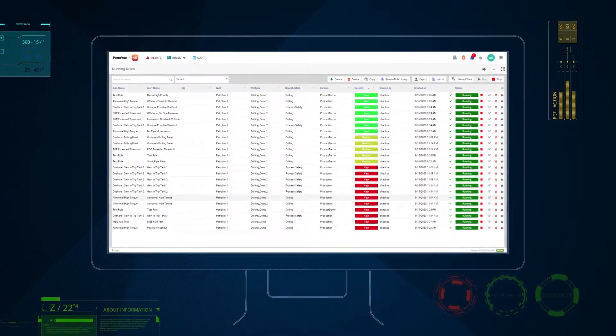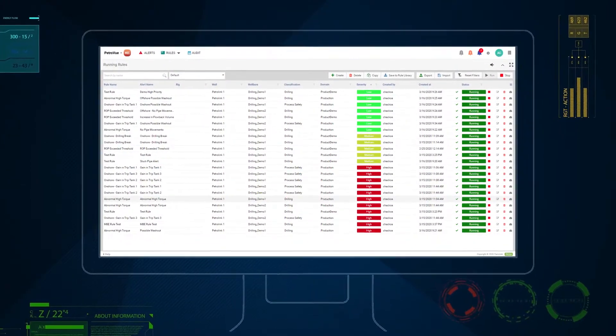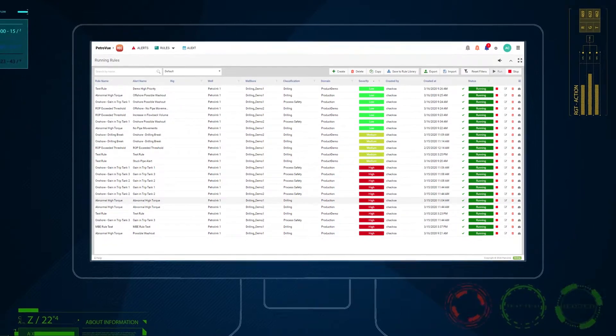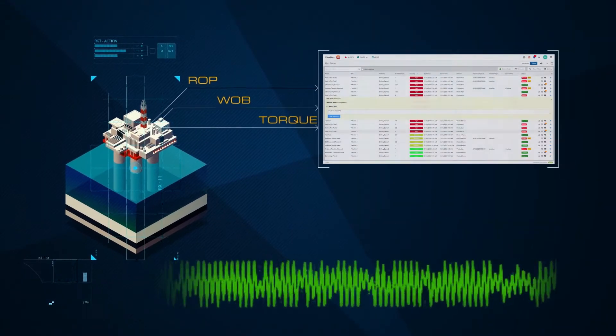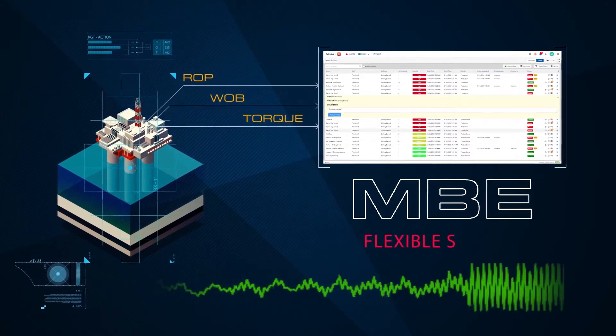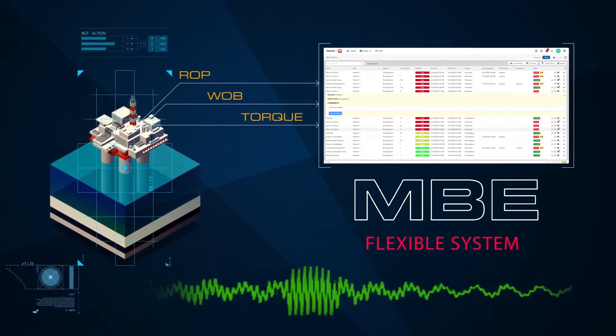As opposed to other systems, MBE qualifies the alert and then reports its priority and severity so you can shift your focus to what's most important. It has the flexibility to monitor and evaluate numerous types of data streams occurring in the oil and gas industry.